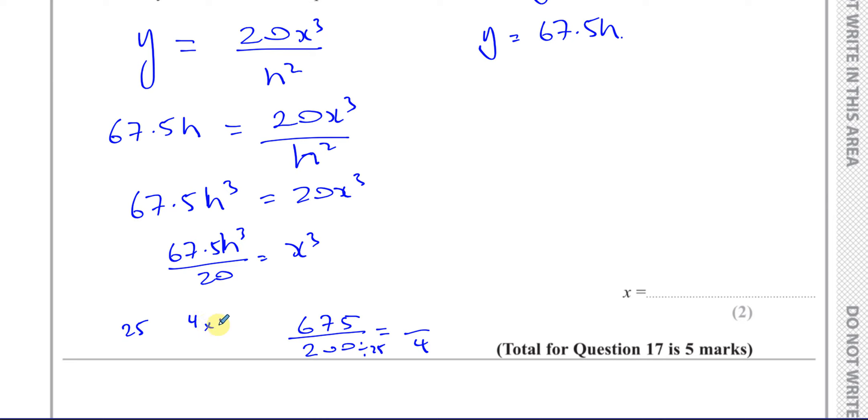We can say x cubed is equal to 27 over 8 times h cubed. So x is going to be the cube root of all of this. We know that we can see that 27 is a cube number, 8 is a cube number. The cube root of 27 is 3. The cube root of 8 is 2. And the cube root of h cubed is h. So x equals 3 over 2 h, and that's the answer.